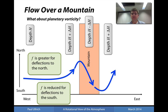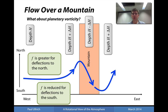Since f is greater for deflections to the north — that is, when you go farther north f increases — it must be that for the same fluid column height, the relative vorticity is negative in order to maintain potential vorticity conservation. Analogously, when the fluid column passes too far south, f is going to be smaller and hence the relative vorticity will be larger to compensate, leading to a northward twist in the fluid column.